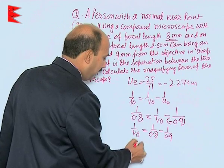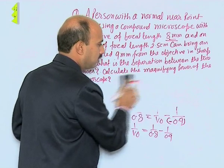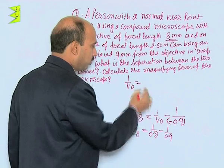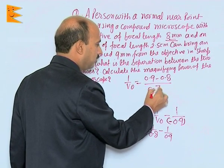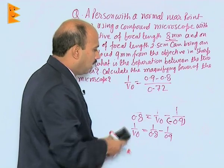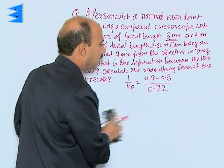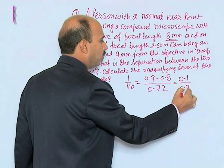When we multiply and solve it, we will get 1 upon V naught is equal to 0.9 minus 0.8 divided by 0.72. After solving this, we can get 0.1 divided by 0.72.